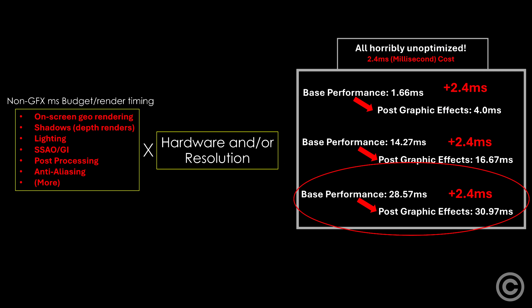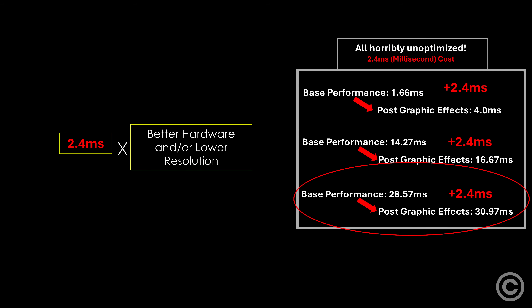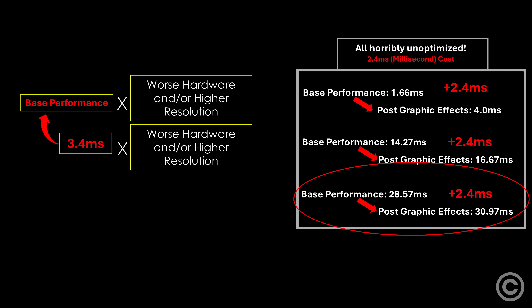Why? Because if someone saw the last scenario's FPS, most people would bash the online post with upgrade recommendations. Better hardware or a lower resolution will reduce the effect's millisecond timing, providing better performance. But the effect's ratio cost will synchronize with how much the base scenario cost increases or decreases with the system specs. This is why hardware upgrade suggestions are irrelevant to the discussion of actual optimization.